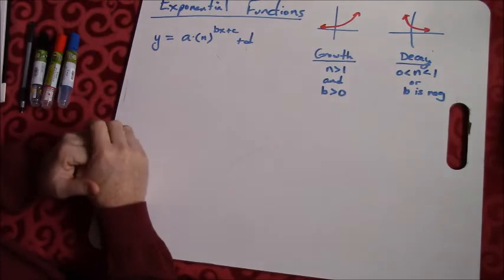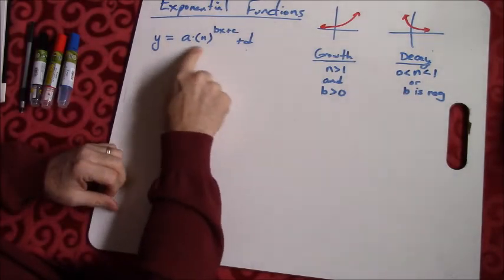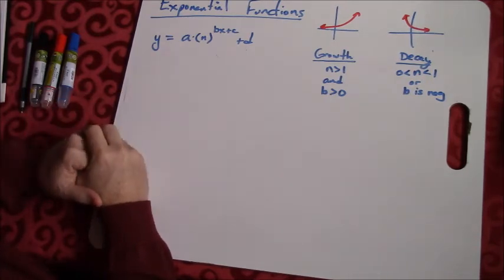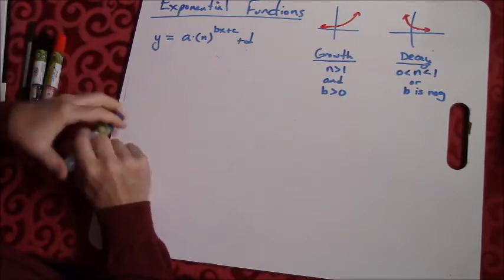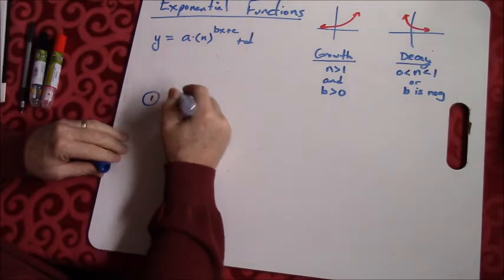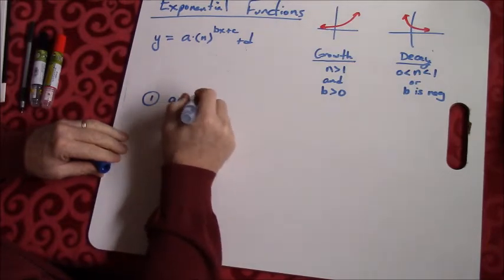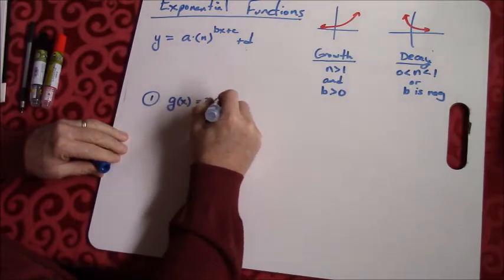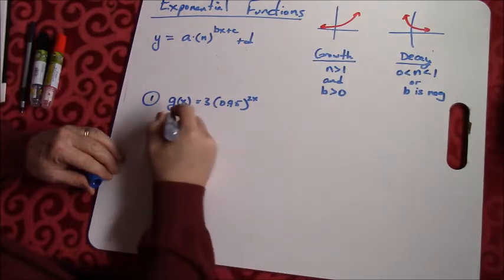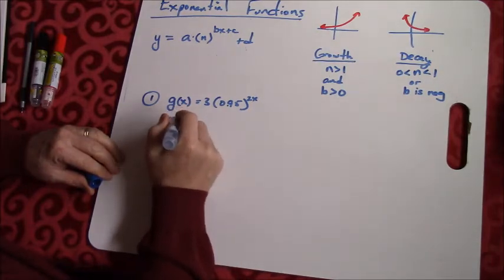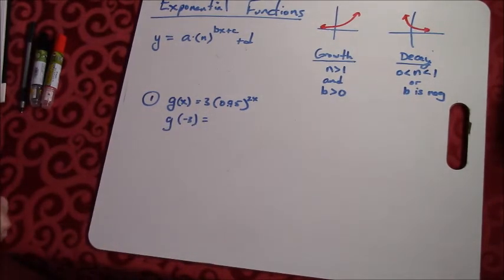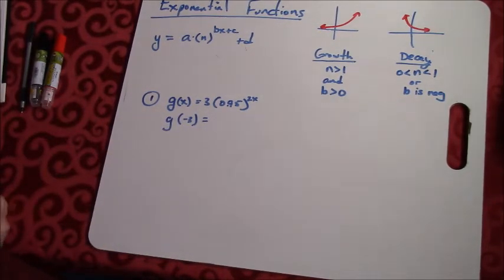So we'll do some practice with this. One of our goals is to be able to graph exponential functions, but probably more importantly is just to understand them and how they work. So let's start with something simple. Let's say I've got g(x) equals 3 times 0.95 raised to the 2x power, and I want for you guys to find g of negative 3. So that's just a calculator problem.